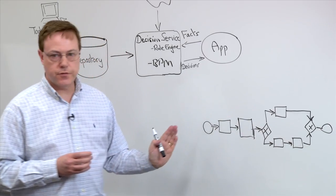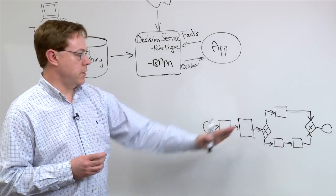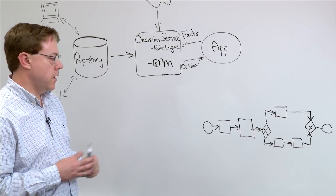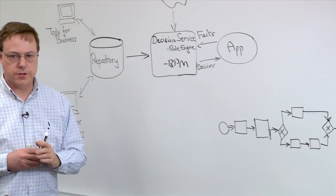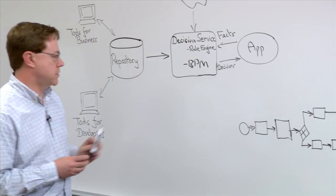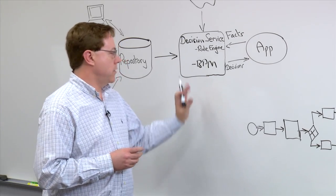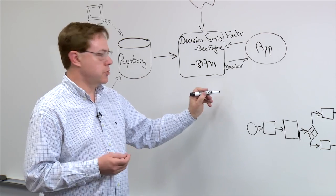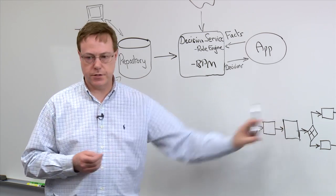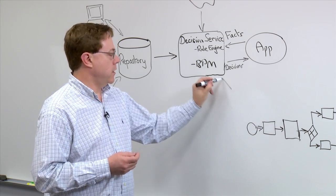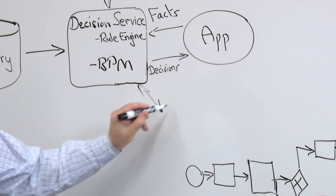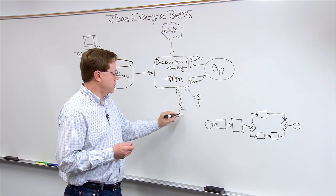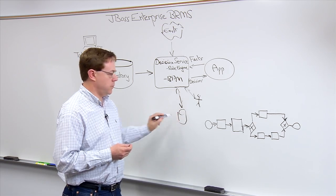With BRMS 5.3, we can model these processes and store them in the repository along with the rules, then deploy them to the runtime for execution. So at runtime, the engine will take an insurance claim through this process as defined by these steps, and interact with people and potentially other applications as defined by the model.